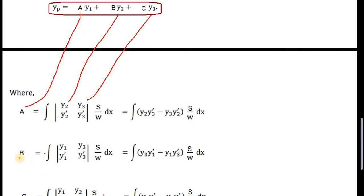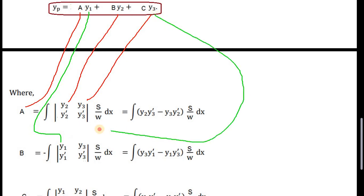To find the value of b, we use y1 and y3 in the determinant and ignore y2. We write y1 and y3 with their derivatives, integrated as S over W dx. We must remember the negative sign; this product is positive and this product is negative. Taking the negative sign into the determinant value, and S over W dx gives the value of b.